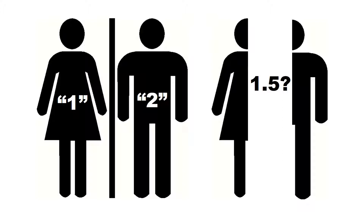But then it wouldn't make sense to say the average sex is 1.5. Although it might fit with our understanding of sex and gender, mathematically it doesn't really make sense. What would make sense is to say we have 5 participants who identified as female and 5 who identified as male. SPSS will compute an average of the numbers, though. In other words, it would tell us the average of participant gender identification was 1.5.